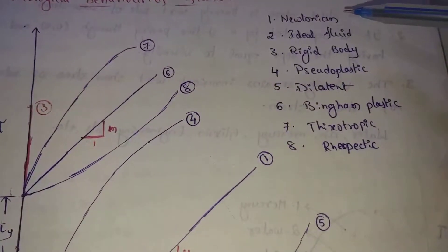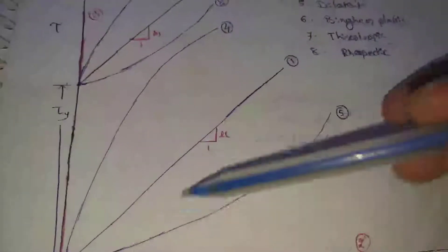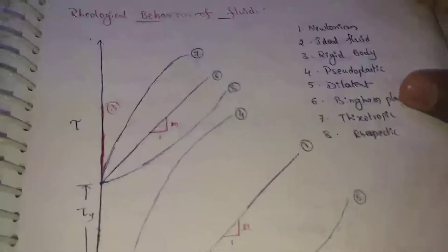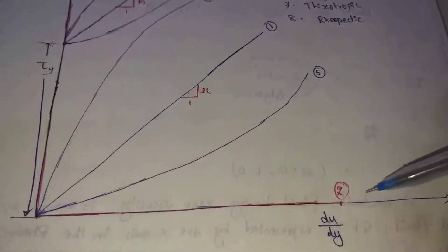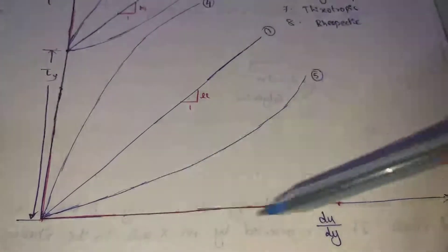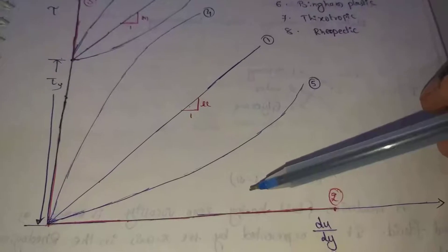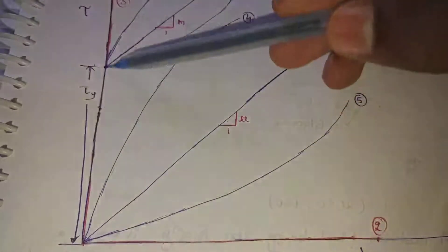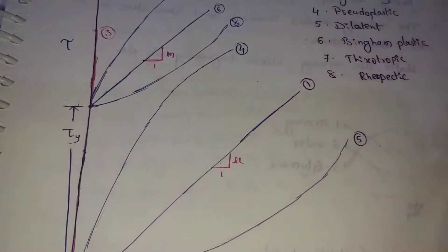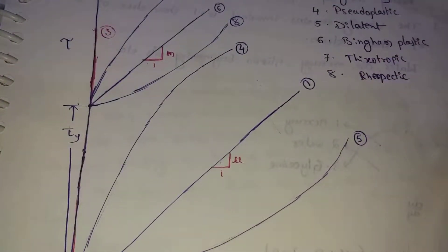The first line on the diagram is Newtonian. The second line is ideal fluid. The third line is a rigid body — we will call it rigid flow.